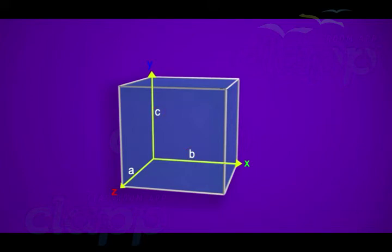These edges may or may not be mutually perpendicular to each other. When these edges join, they form certain angles. The angle formed between B and C is alpha, the angle formed between A and C is beta, and the angle formed between A and B is gamma.